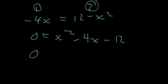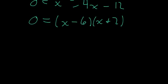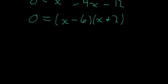I get that 0 equals x squared minus 4x minus 12. And then that can be factored as 0 equals x minus 6 and x plus 2. So then finally, when we solve for x, we find that the two curves intersect at x equals 6 and negative 2.